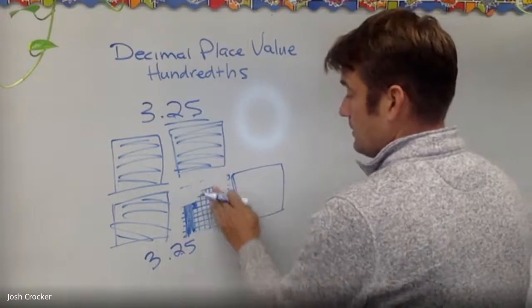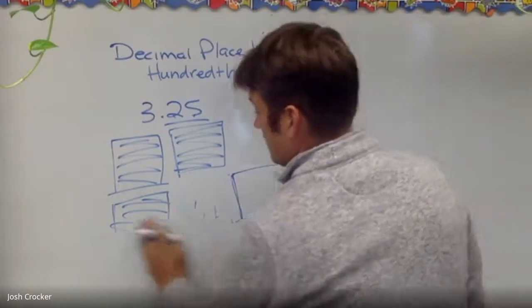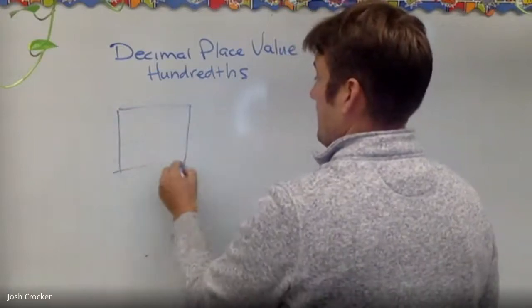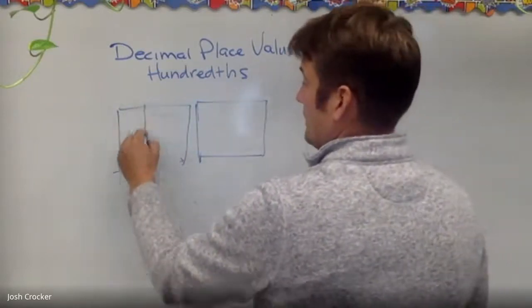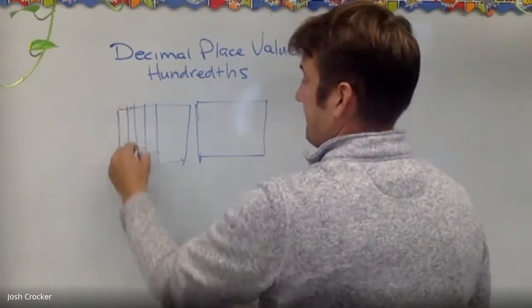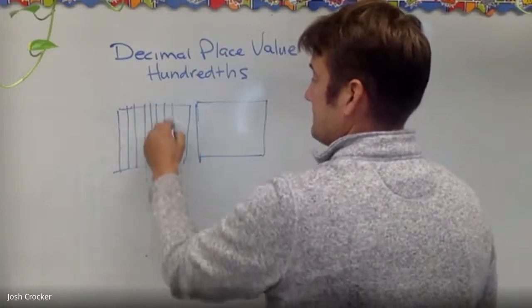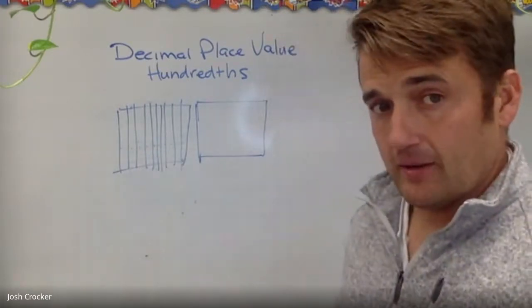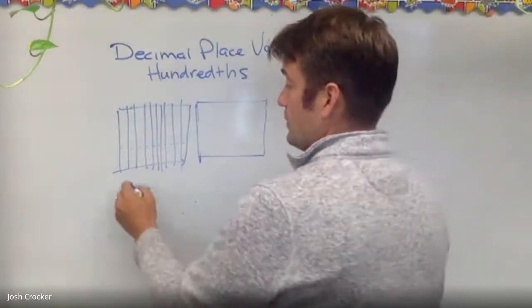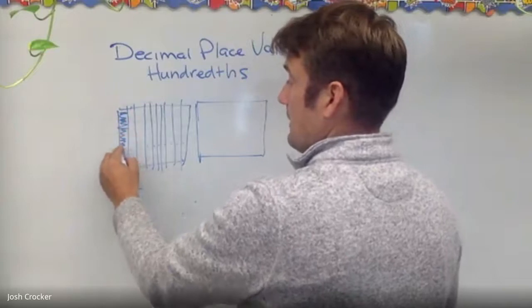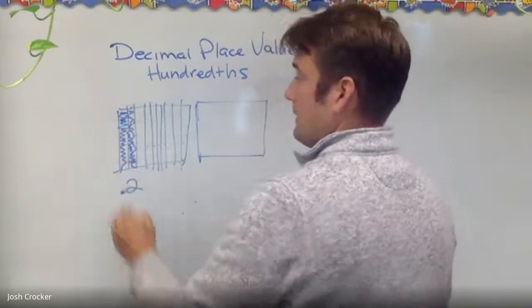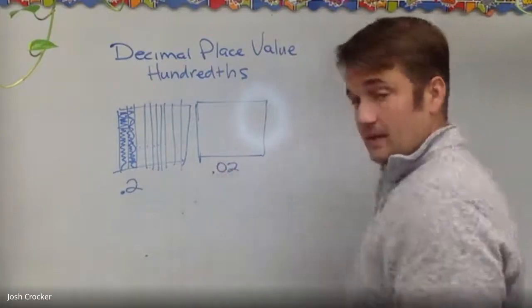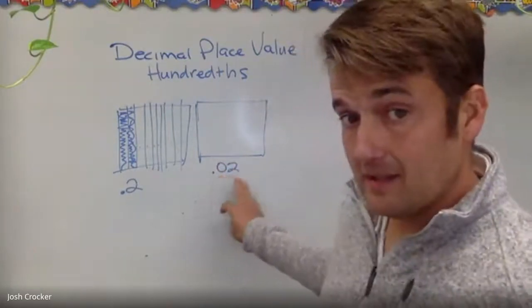We're going to get rid of the wholes because now we're just talking about the difference between tenths and hundredths. So if I have two models here — one with 10 pieces and one with 100 — if I wanted to draw two tenths, that would look like two out of ten. If I wanted to talk about two hundredths, it would be written with a zero in front: no tenths, just two hundredths.